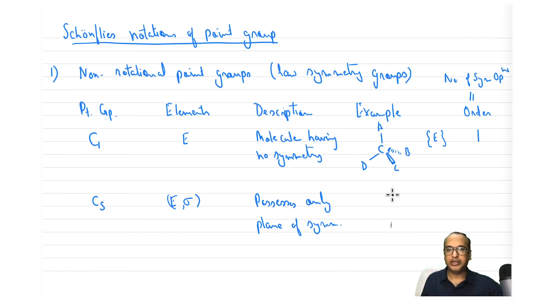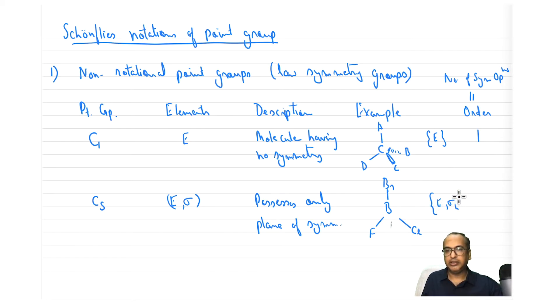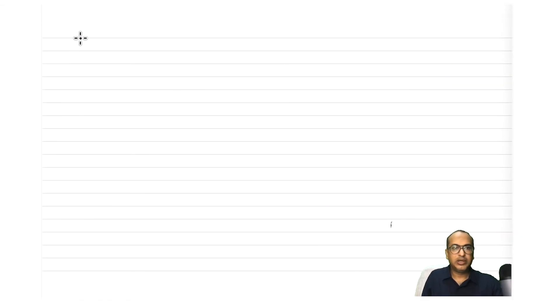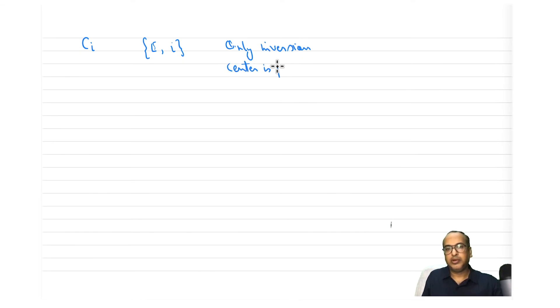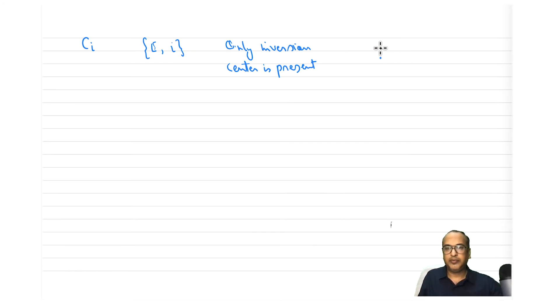The next non-rotational point group is Cs, which has elements E and sigma. The molecule possesses only a plane of symmetry. An example is a molecule with Br, F, and Cl — its elements are E and sigma_h, and the order is two.